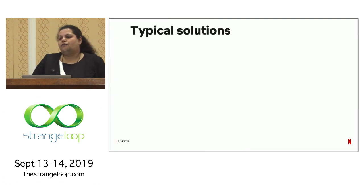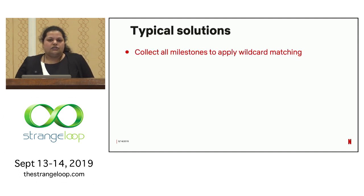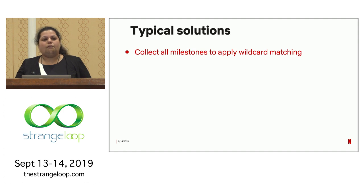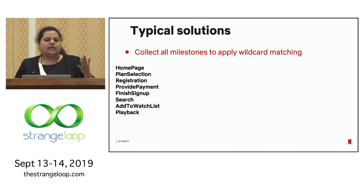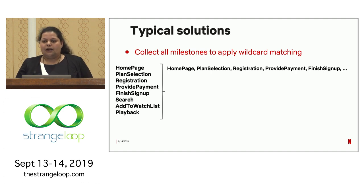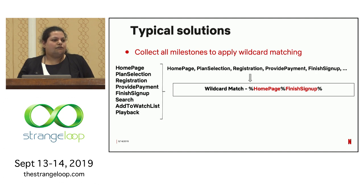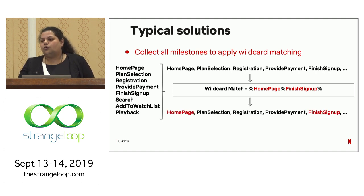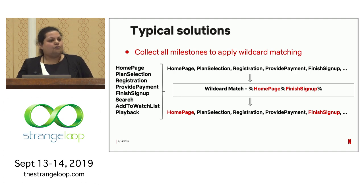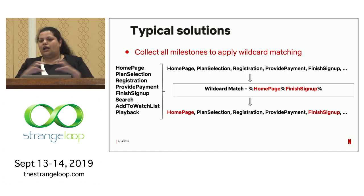Let's look at a couple of ways we've typically tried to solve this in the past. A common solution is collecting all of these milestones into memory and then applying some sort of wildcard matching on it. For example, if these are the steps a user went through, we would collect them into a single string with a separator and apply wildcard matching to see if the path was a match. This syntax comes from SQL, but you could use wildcard matching from any language. This works well if your path is really simple — no forks, no iterations, no back-and-forth — and as long as the collapsed string can fit into memory.